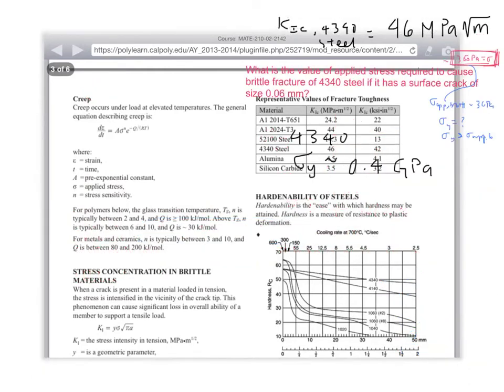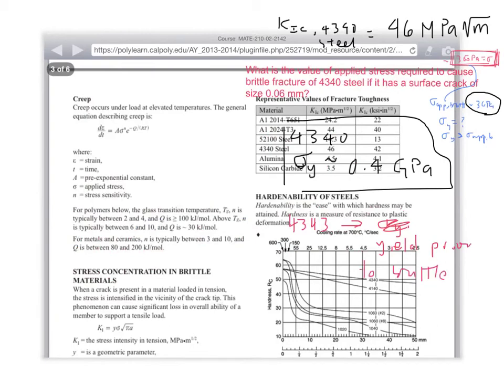Okay, I just went and looked this up. And what I found was that the yield strength for 4340 steel is about 0.4 gigapascals. So we calculated that it would require three gigapascals in order to cause this brittle failure. So what would happen in this case is the 4340 would yield prior to brittle failure or brittle fracture.